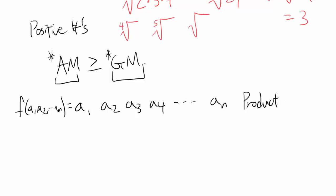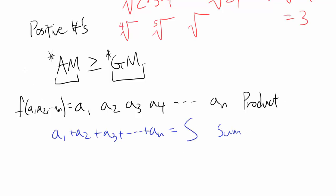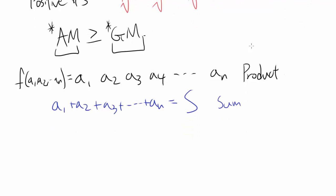And you have a constraint, which is S, when you add up all the numbers: A₁ plus A₂ plus A₃, all the way to Aₙ, equals S — you always get a certain sum. What do we want to do? We want to maximize this product. Once we maximize it, you are going to see a way to prove AM-GM inequality. So this is our constraint and this is our function that we want to maximize.